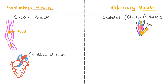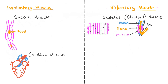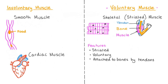Some examples of voluntary skeletal muscles can be found in our limbs, such as to allow our arms and legs to move. They are called skeletal muscles as they are attached to the bones of our skeleton by tendons. Skeletal muscle cells are sometimes called striated muscles due to their stripey appearance. Let's keep a checklist of the key features that we've covered so far.